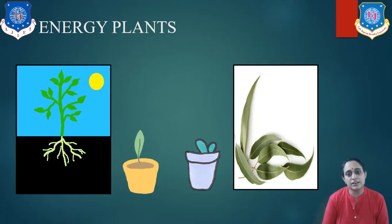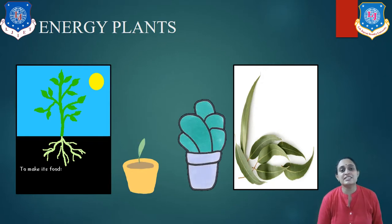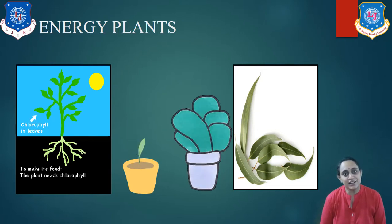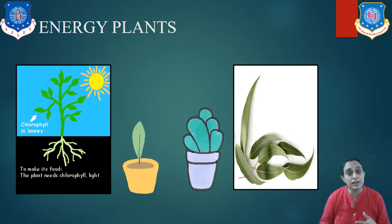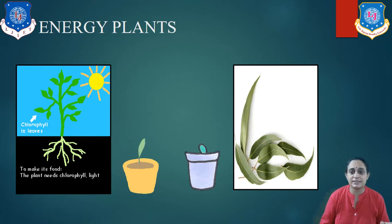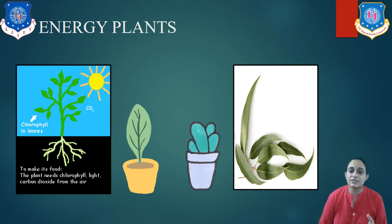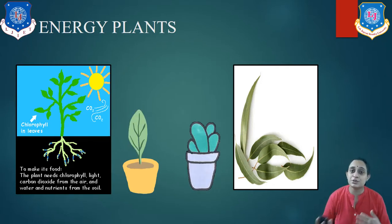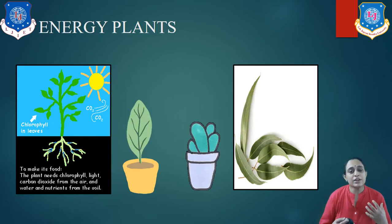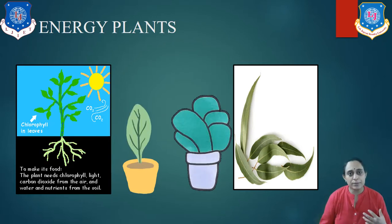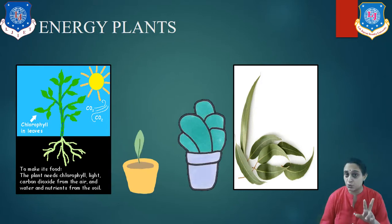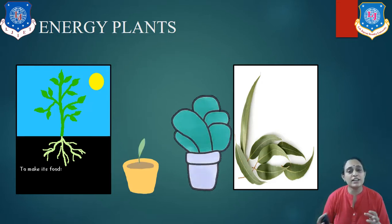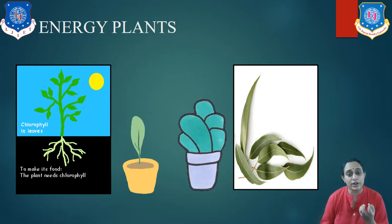Now let us understand what is known as an energy plant. As the word suggests, we are getting energy from the plant. Plants which are not useful in any other way except to be used as a fuel are known as energy plants — they are specially cultivated as an alternative source of energy. It has two categories: rapid growing plants and oil yielding plants.